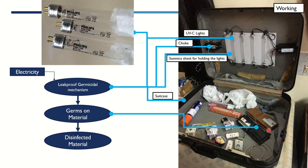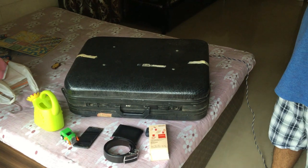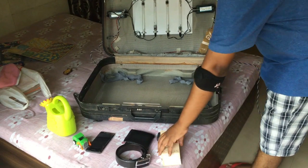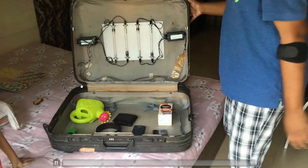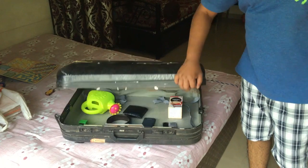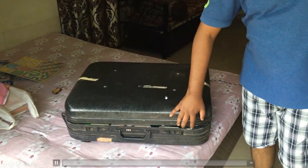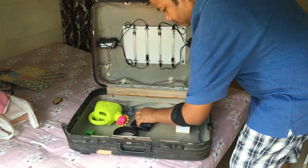Whenever you come from outside, you can keep all your materials here, close the box, and expose everything for 10 to 20 minutes. With 44 watts, 10 to 20 minutes is good enough. There is another video linked here showing how exposure time is calculated. This is the box — I am keeping all the materials inside here. Make sure when using this, no child is nearby, as UV radiation is harmful to eyes. I'm just showing you how the UV light looks, then I exposed it for 20 minutes, after which the materials can be reused.